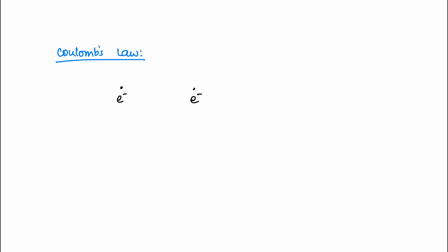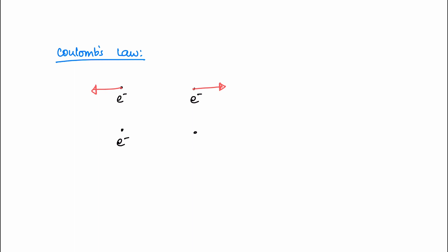For the force, since force is a vector, it has a magnitude and a direction. So if we consider an electron and a proton — looking at the two charges — there is an attraction force between them. So there is an attraction force between an electron and a proton.